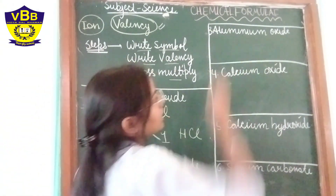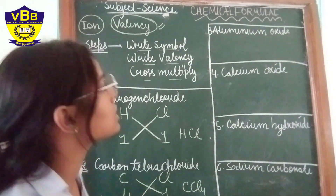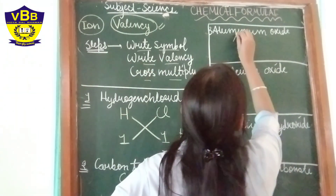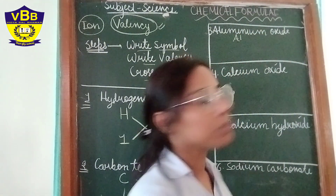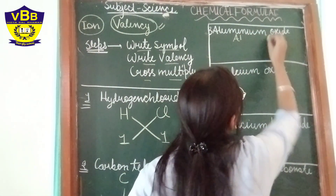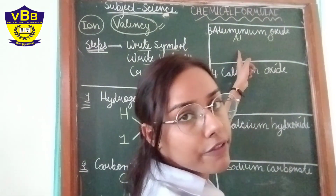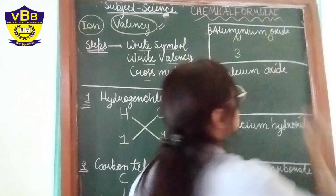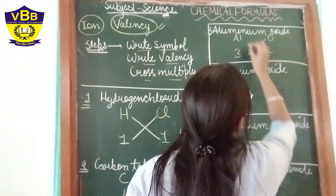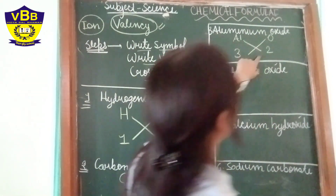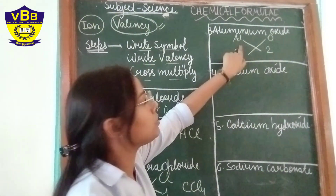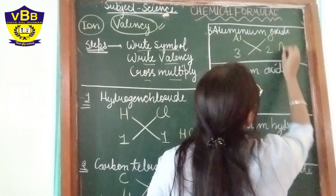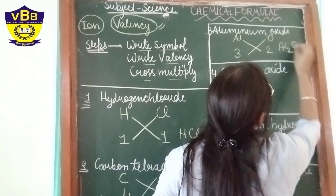Next is aluminium oxide. The symbol of aluminium is Al and the symbol of oxygen is O. The valency of aluminium is 3 and the valency of oxygen is 2. When we cross multiply, we get 2 atoms of aluminium and 3 atoms of oxygen. So the formula is Al2O3.